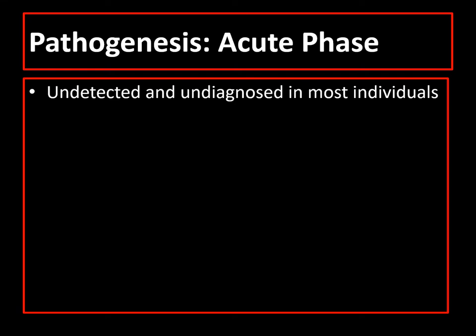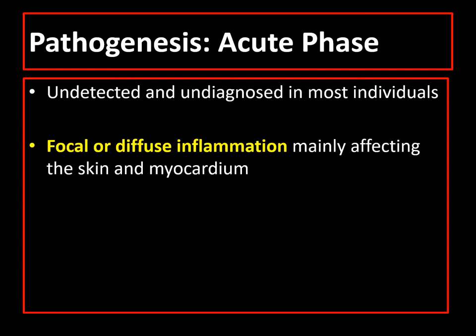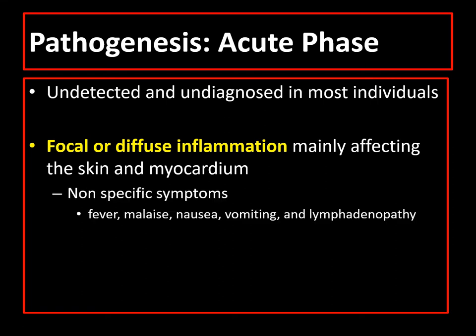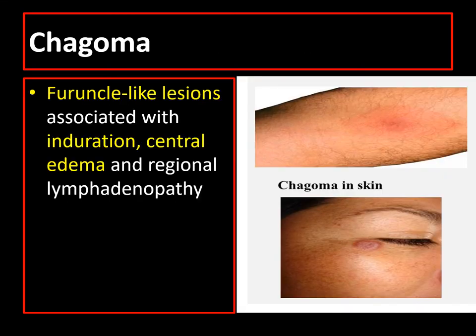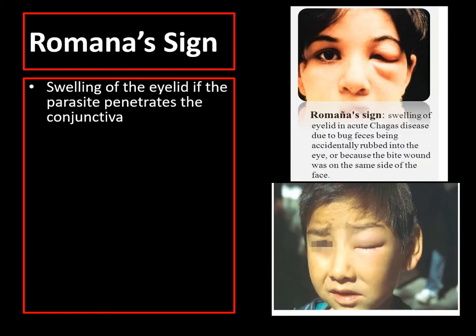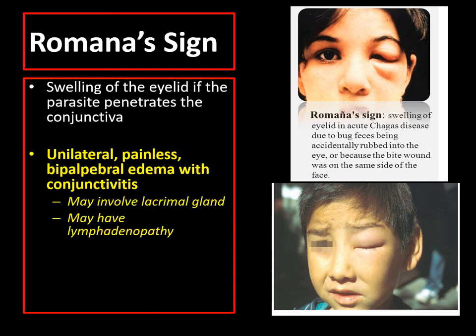During the acute phase, most cases are undetected and undiagnosed. If there are manifestations, it might be focal or diffuse inflammation mainly affecting the skin and myocardium with nonspecific symptoms. Cutaneous manifestations are usually seen at the site of inoculation. Chagoma is a furuncle-like lesion associated with induration, central edema, and regional lymphadenopathy that appears at the site of entry of the parasite. Romana's sign is the swelling of the eyelid if the parasite penetrates the conjunctiva, described as unilateral, painless, bipalpebral edema with conjunctivitis with or without involvement of the lacrimal gland and lymphadenopathy, and usually resolves after one to two months.